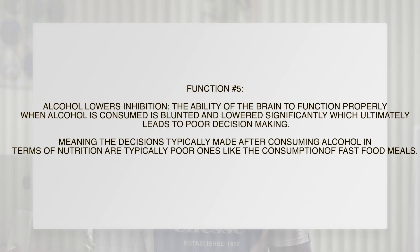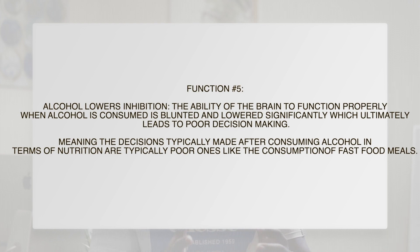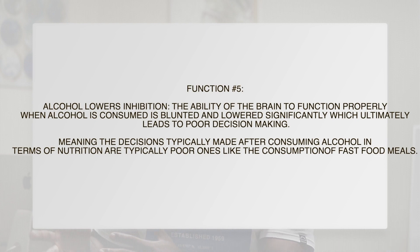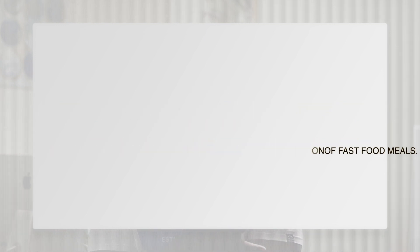Function number four: alcohol lowers inhibition — basically the ability of the brain to function properly. When alcohol is consumed, that is blunted and lowered significantly, which leads to poor decision-making. Decisions made after consuming alcohol in terms of nutrition are typically poor — like consuming fast food, pizza or burgers. You've probably been out drinking all night and all you want is pizza, or you wake up hungover and want a burger.